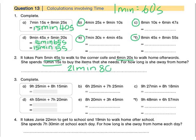Now again, we can't leave our answer like this because we have a full minute hiding in there. So 80 seconds minus 60 seconds gives us another full minute. We'll have 22 minutes in total and we'll be left with 20 seconds. So that is for how long she is away from home. Make sure that you've filled this in and written it neatly in your workbook.